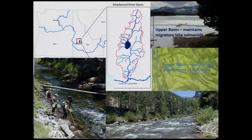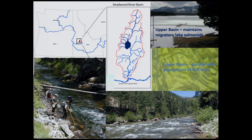So why the Deadwood? The Deadwood is located in Central Idaho. Here is the Deadwood reservoir, right in the middle of the Deadwood rivers. The upper part is still a natural system. The lower part is regulated by the dam. The reservoir has different tributaries, including major tributaries of the Deadwood River.